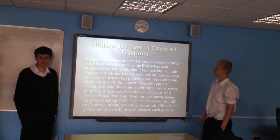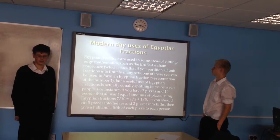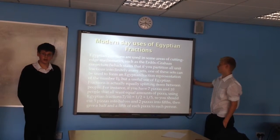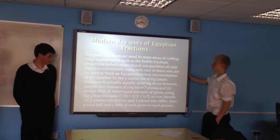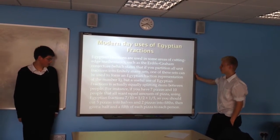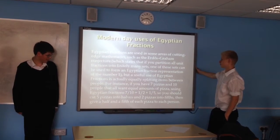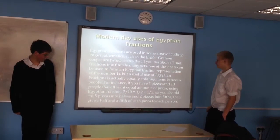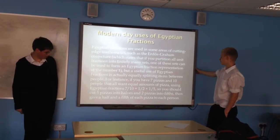Egyptian fractions are used in some areas of cutting-edge mathematics, such as the Erdős–Graham conjecture, which states that if you partition all unit fractions into finitely many sets, one of these sets can be used to form an Egyptian fraction representation of the number 1. A useful practical use of Egyptian fractions is equally splitting items between people. For instance, if you have 7 pizzas and 10 people that all want equal amounts, using Egyptian fractions: 7/10 equals 1/2 plus 1/5. So you cut 5 pizzas into halves and 2 pizzas into fifths, then give each person a half and a fifth.